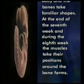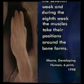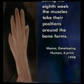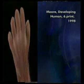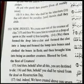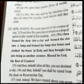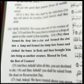This event is described in a scientific publication with the following words: During the seventh week, the skeleton begins to spread throughout the body, and the bones take their familiar shapes. At the end of the seventh week, and during the eighth week, the muscles take their positions around the bone forms.